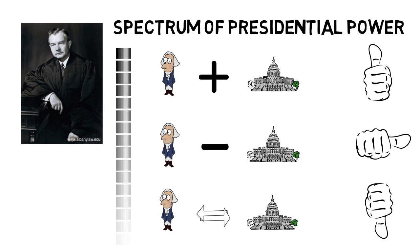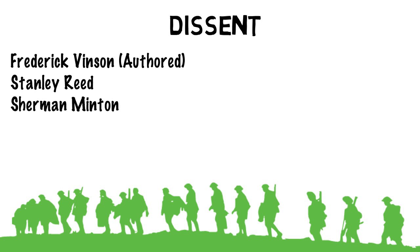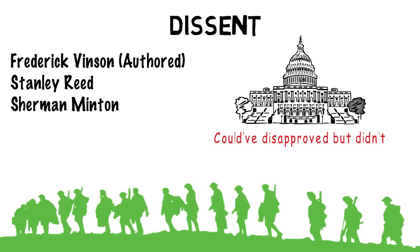The dissent, written by Chief Justice Vinson, felt differently than the majority. They felt that the national emergency of being in the Korean War gave the president the inherent authority to take control of steel mills, or anything else for that matter, to further the war effort. Vinson also pointed out that Congress could have at any point responded with disapproval or approval, but they didn't.